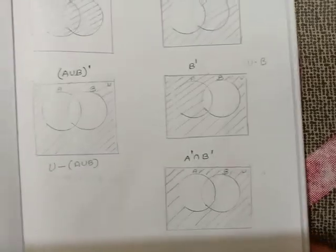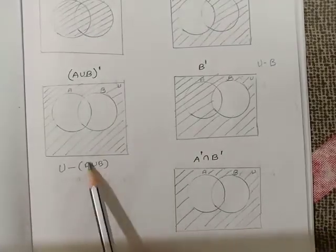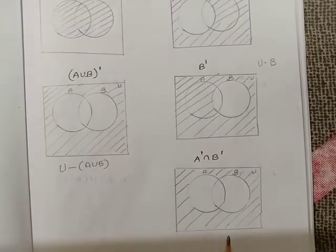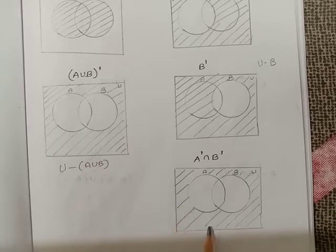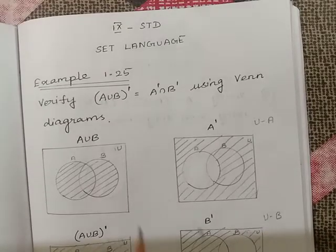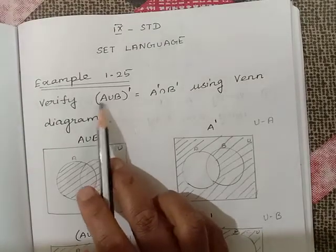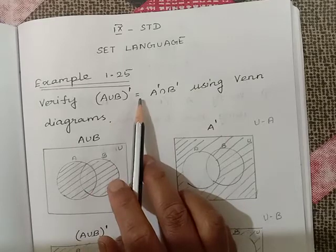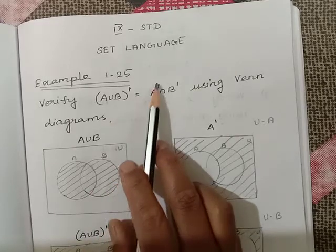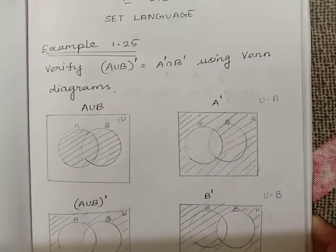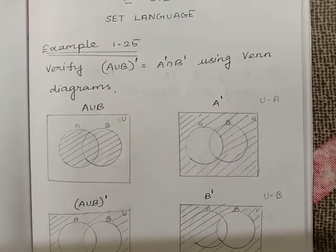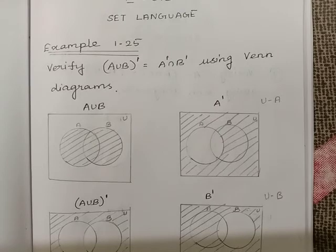Now look at the left hand side and right hand side — both diagrams are equal. Therefore (A∪B)' = A'∩B'. Thank you children. Any doubts, please comment.